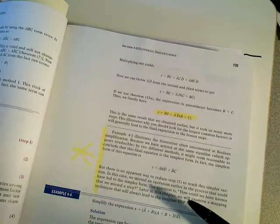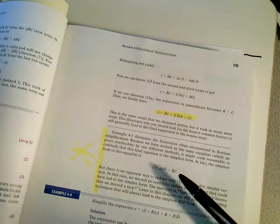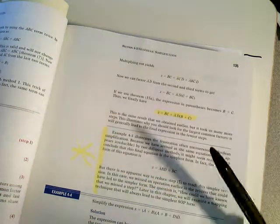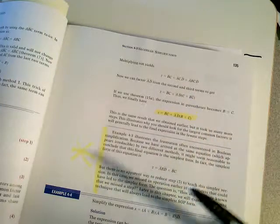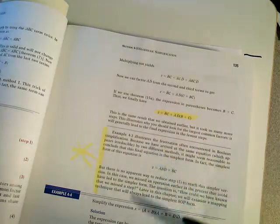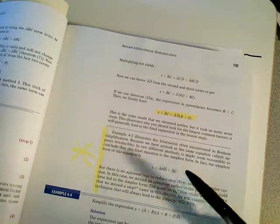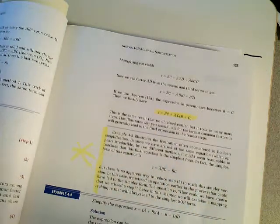But later on in the chapter, we're going to be working with K-maps, and you won't use Boolean algebra anymore through the rest of the semester. You just use Boolean algebra here the first three or four weeks. After that, we use K-maps, and K-maps always gives you the simplest solution.